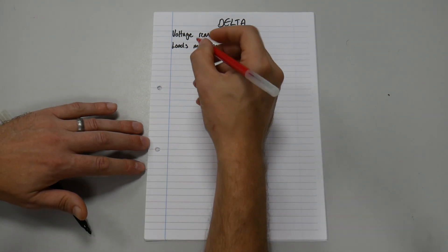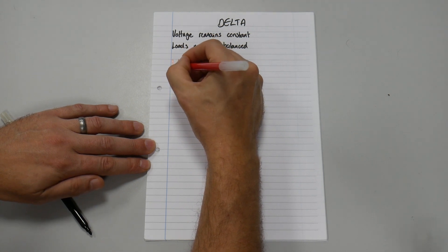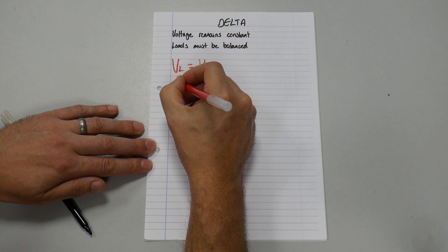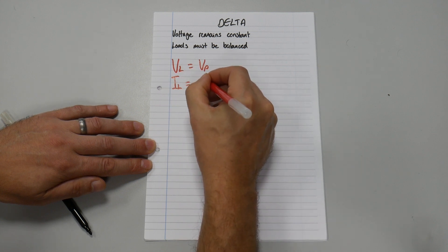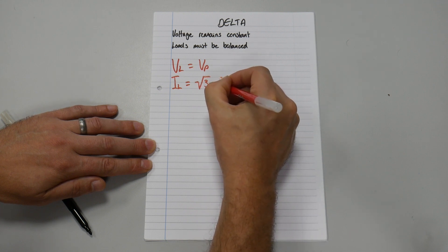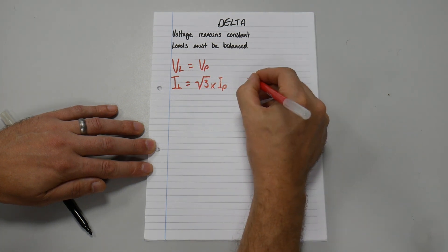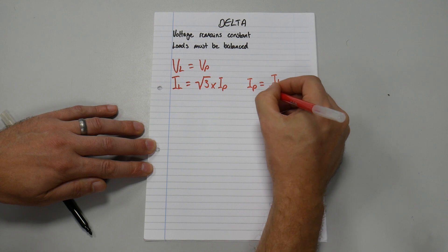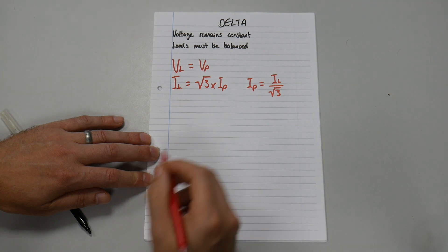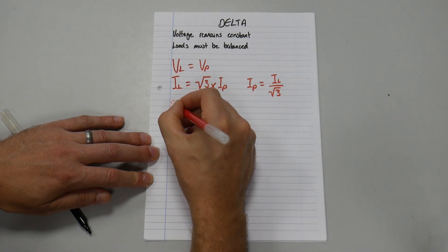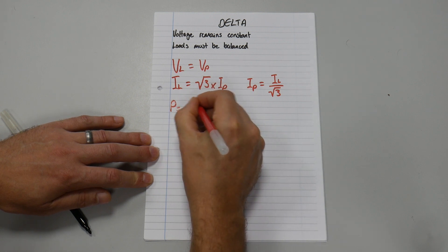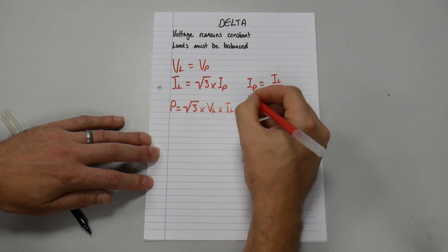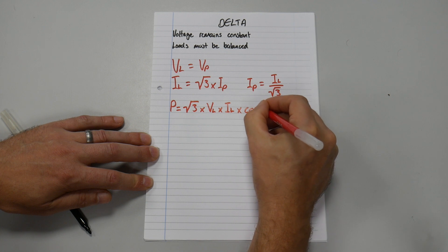And then on to the formulas themselves for delta. So we have VL equals VP. We then have IL equals the square root of 3 times IP. And if we transpose that we have IP equals IL over the square root of 3. And the last formula is power equals the square root of 3 times VL times IL times the cosine angle.